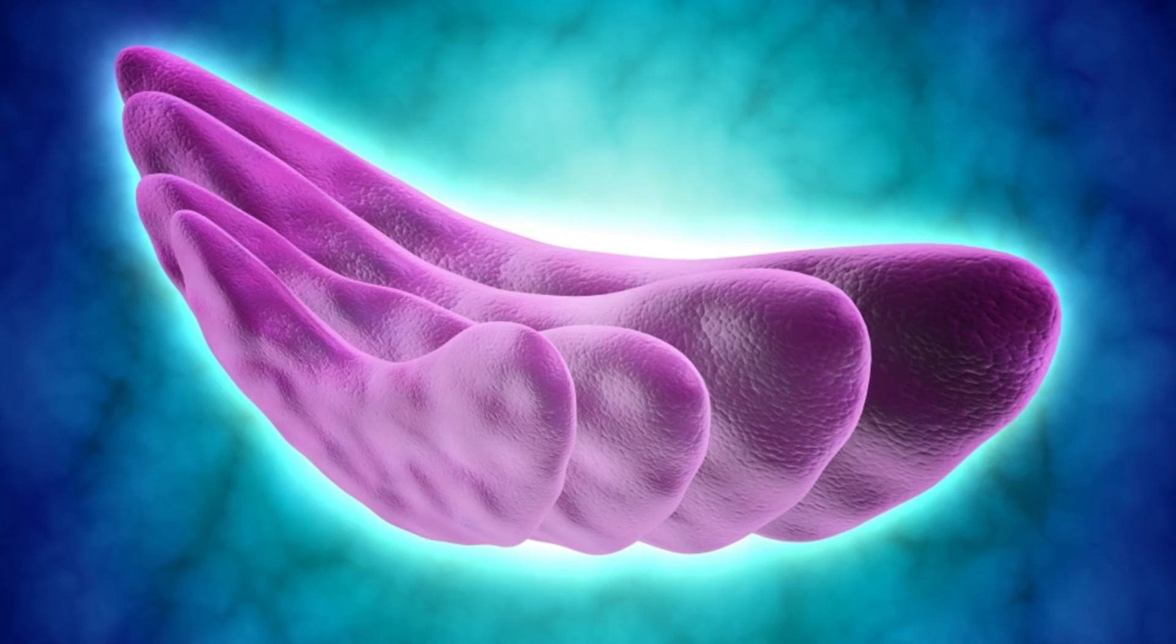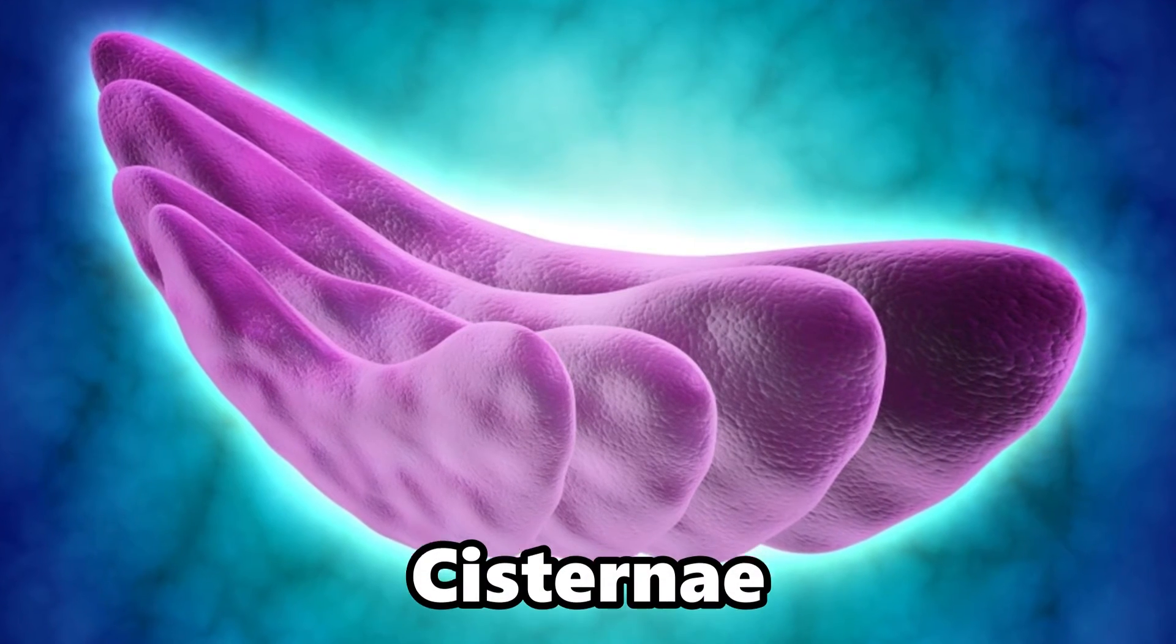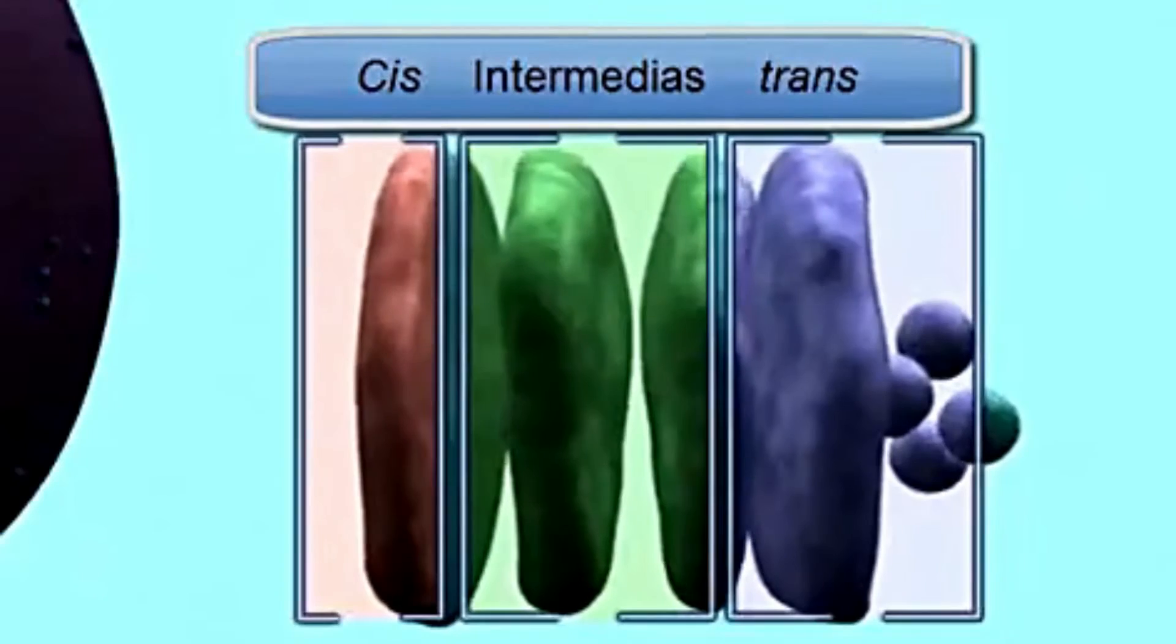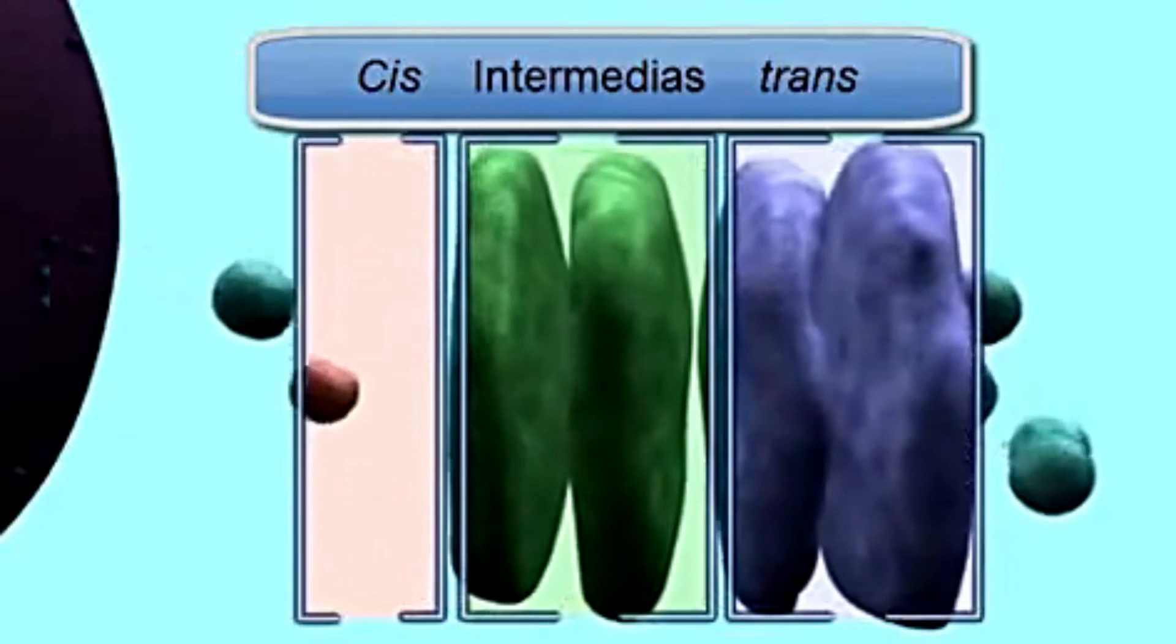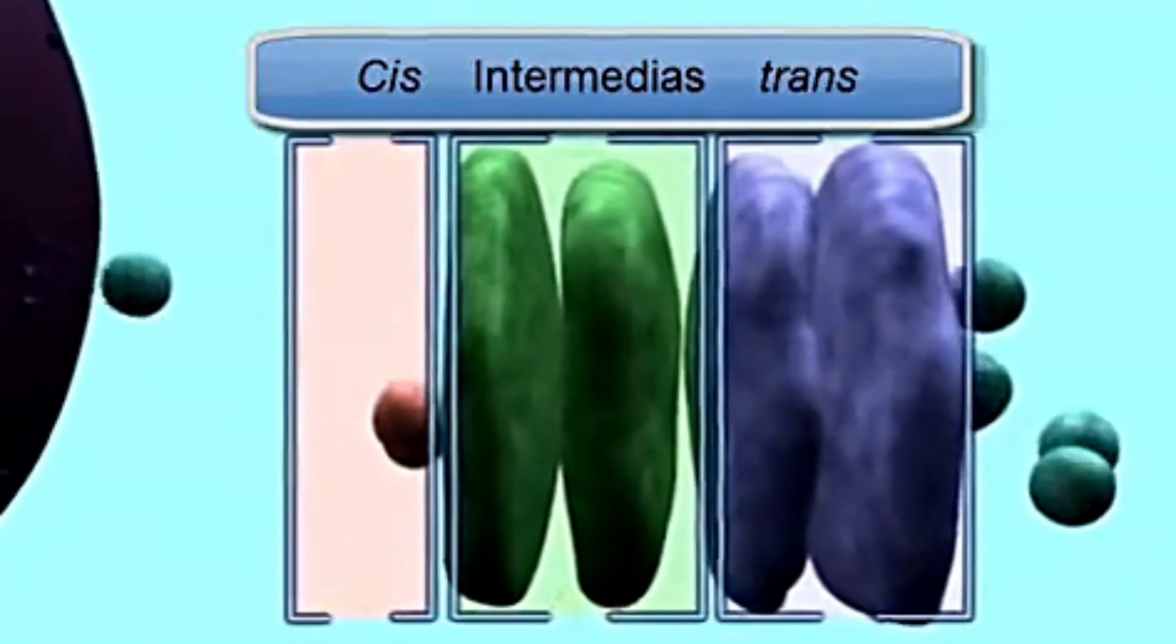Fascinating, isn't it? But wait, there's more to discover about the Golgi apparatus. The Golgi apparatus is composed of flattened sacs called cisternae. These cisternae are stacked on top of each other, forming a structure with distinct functional regions often referred to as cis, medial, and trans compartments.